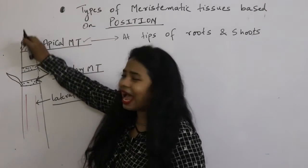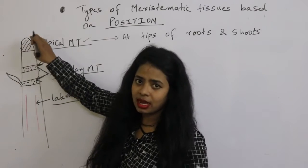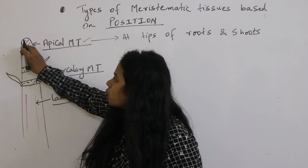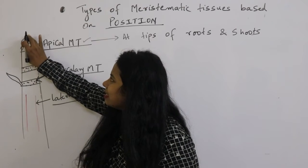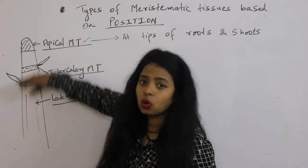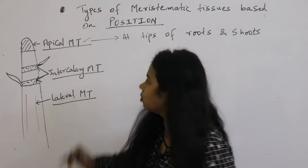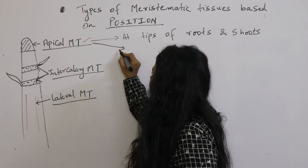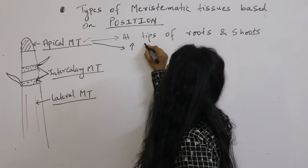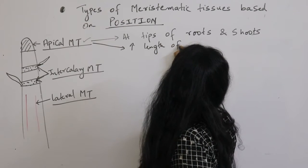If there is something added here — imagine the cells are dividing and cells are being added here — the tip is going to increase in length. That means it is going to increase the overall length of the plant. So this meristematic tissue helps in increasing the length of a plant.